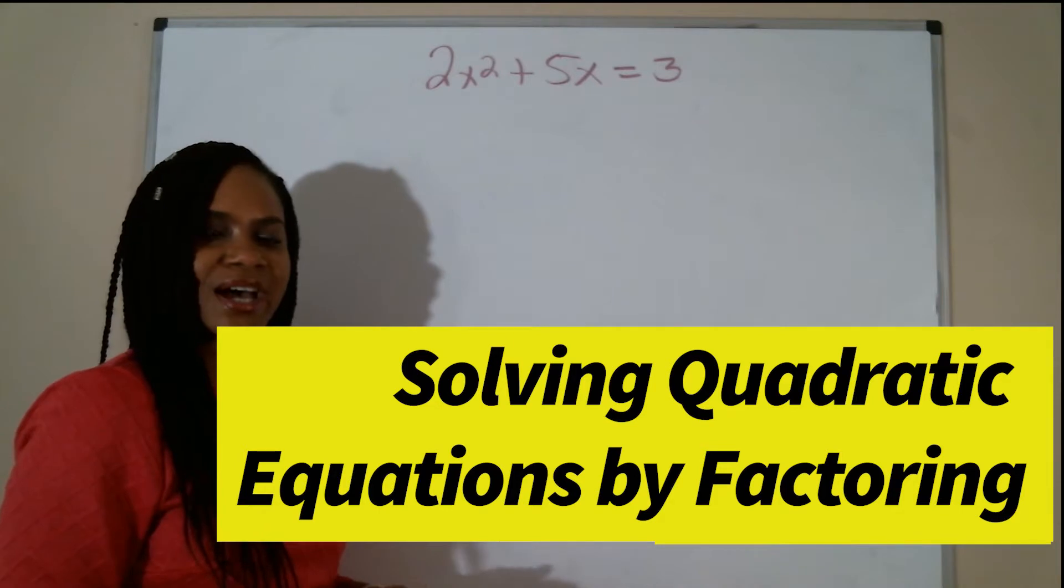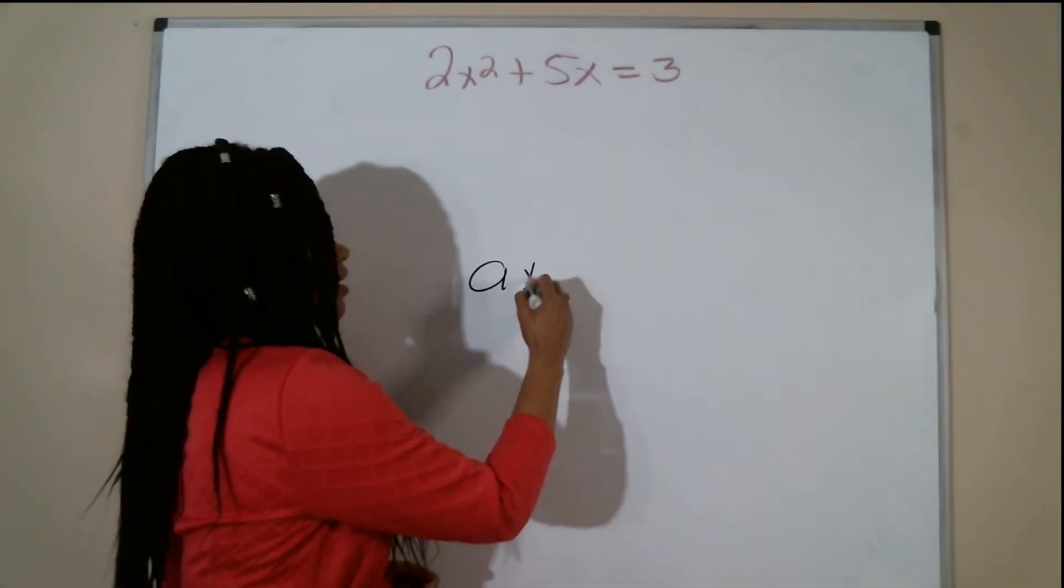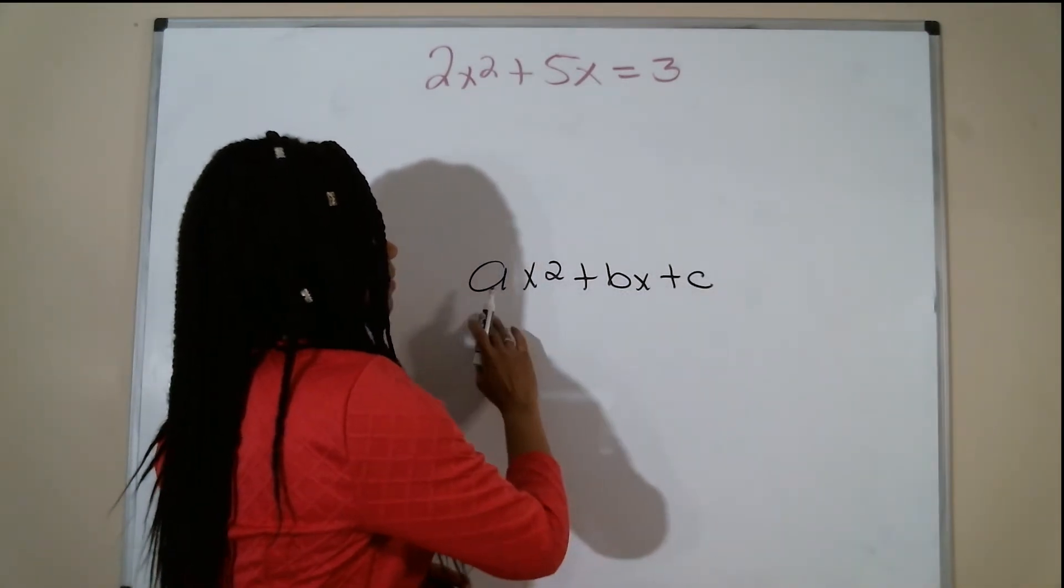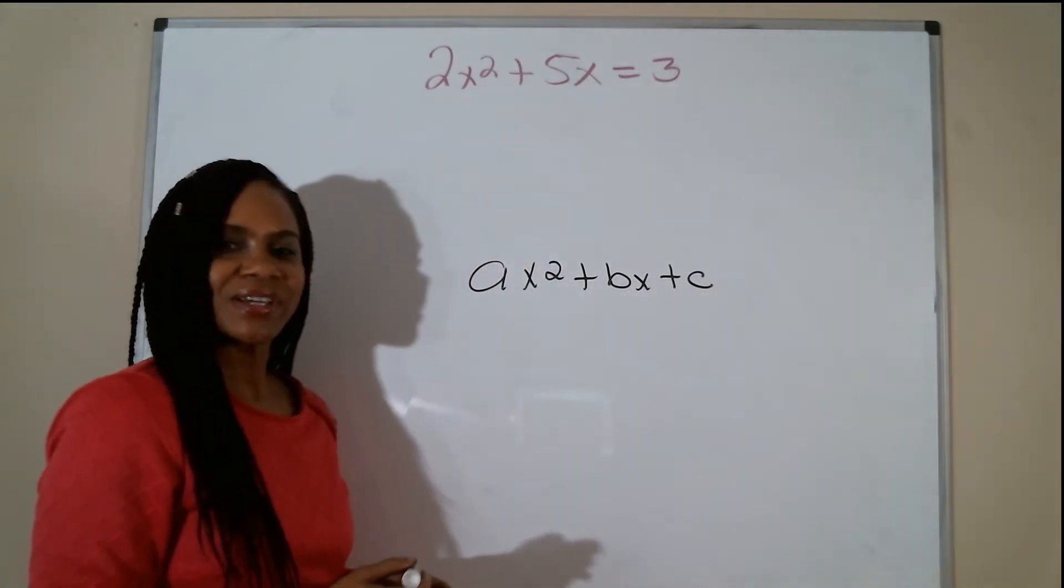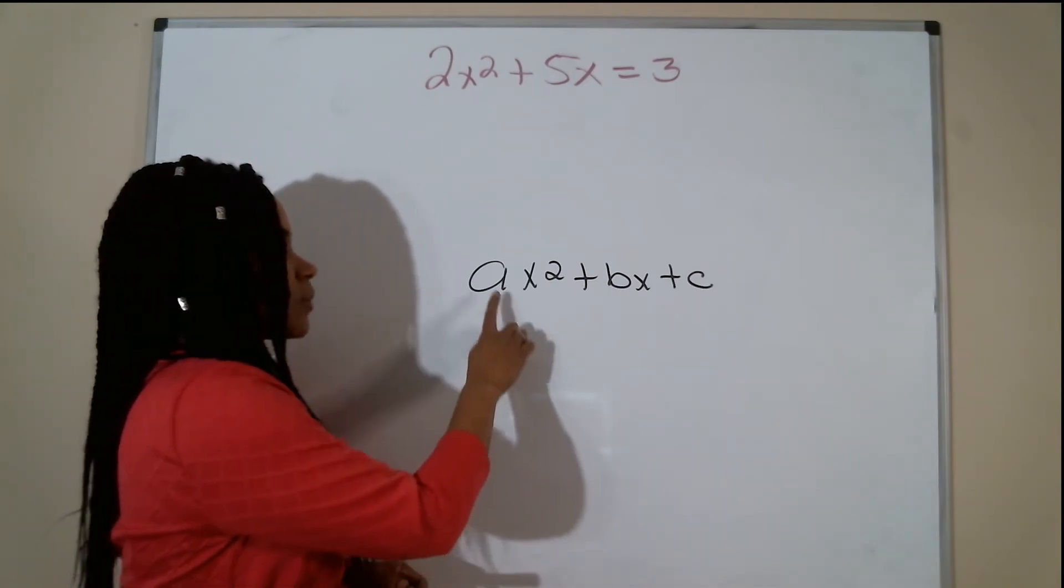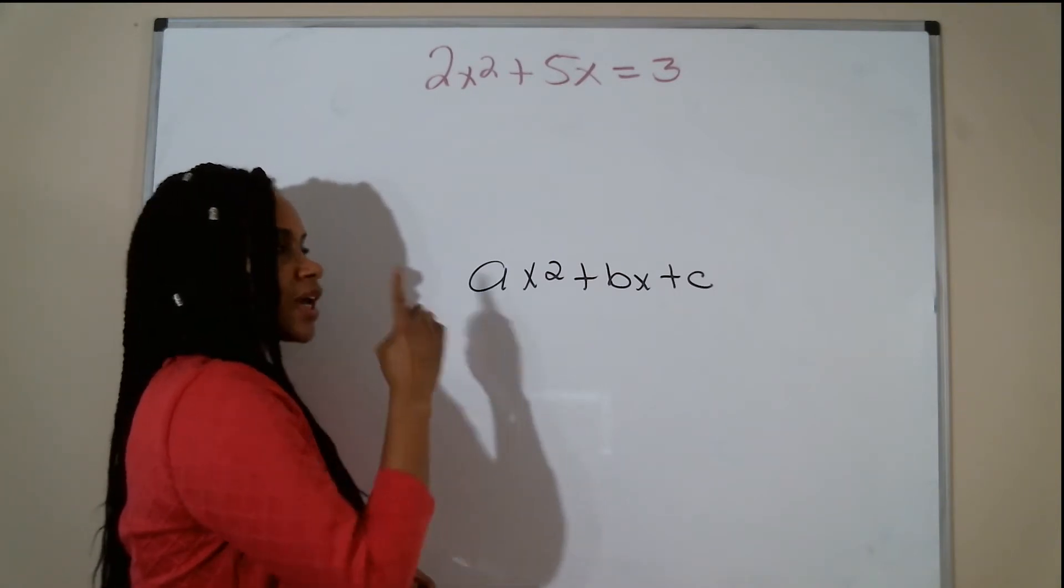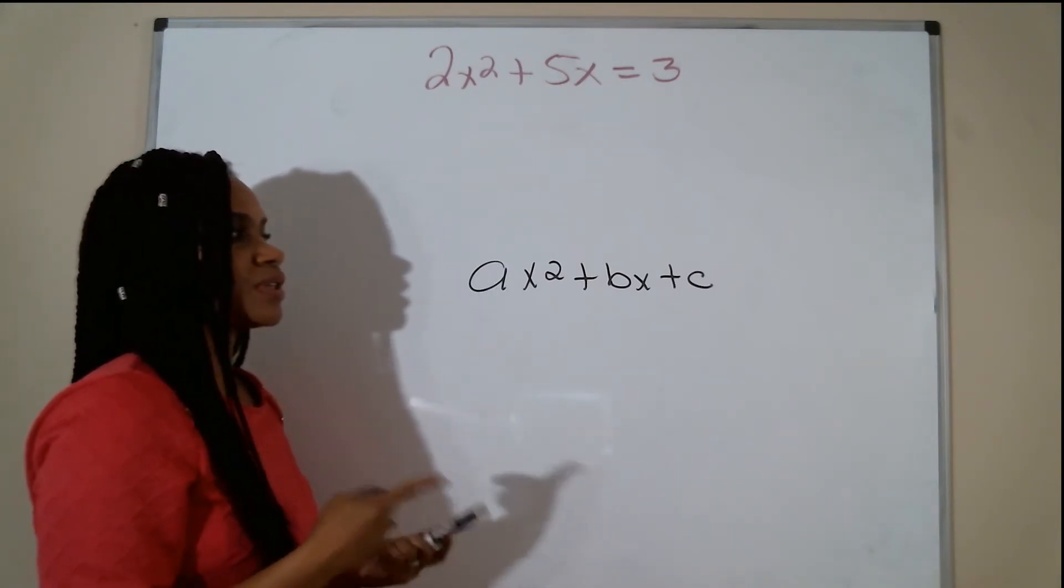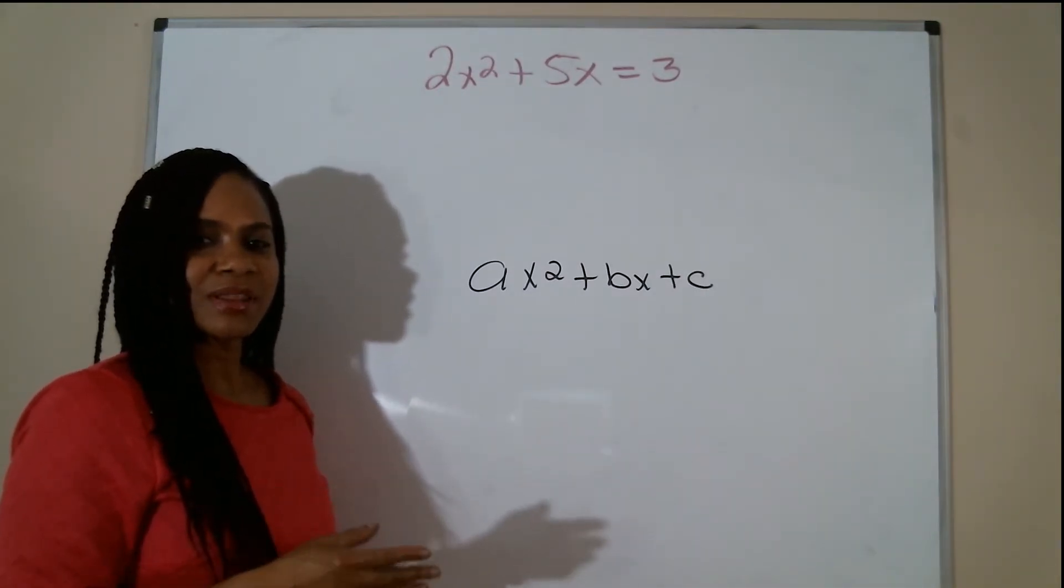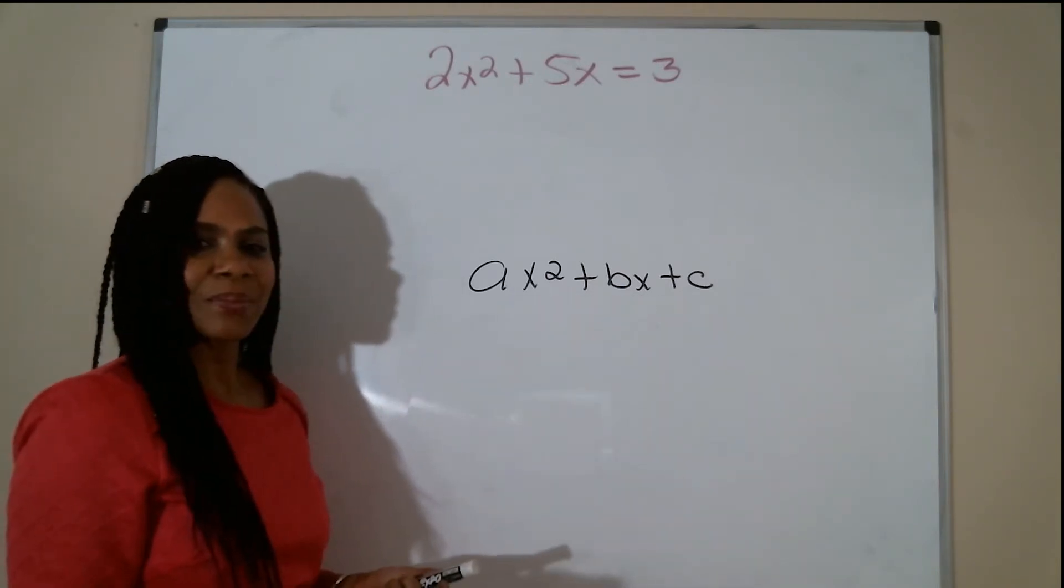So in this lesson, we're going to learn how to solve quadratic equations in the form of ax squared plus bx plus c by factoring using the slip and slide method. Basically, all of our equations will have a number other than one in front of our x squared term.